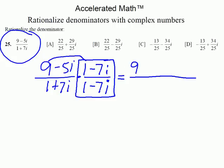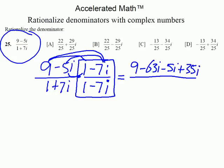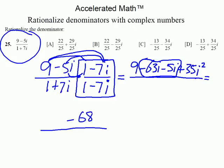The first two terms give us 9. The outer terms: 9 times negative 7i is negative 63i. The inner terms: negative 5 times 1 is negative 5i. Combining those: negative 63i and negative 5i gives negative 68i. And then the last two terms: negative 5 times negative 7i — negative times negative is plus — so that's plus 35, and it was i times i, so it becomes i squared.